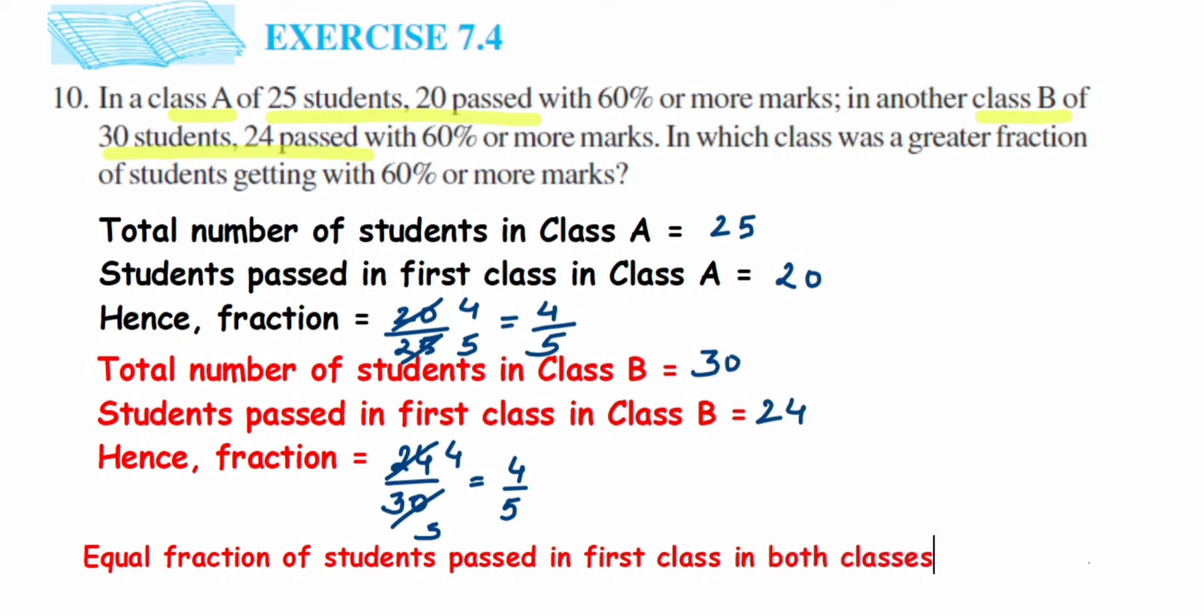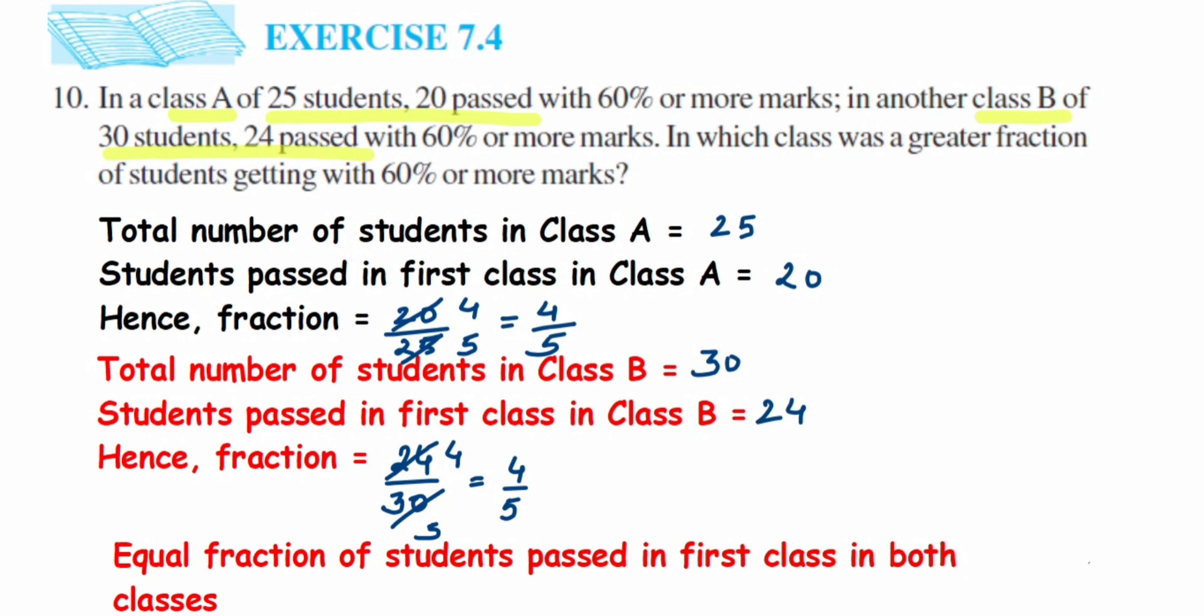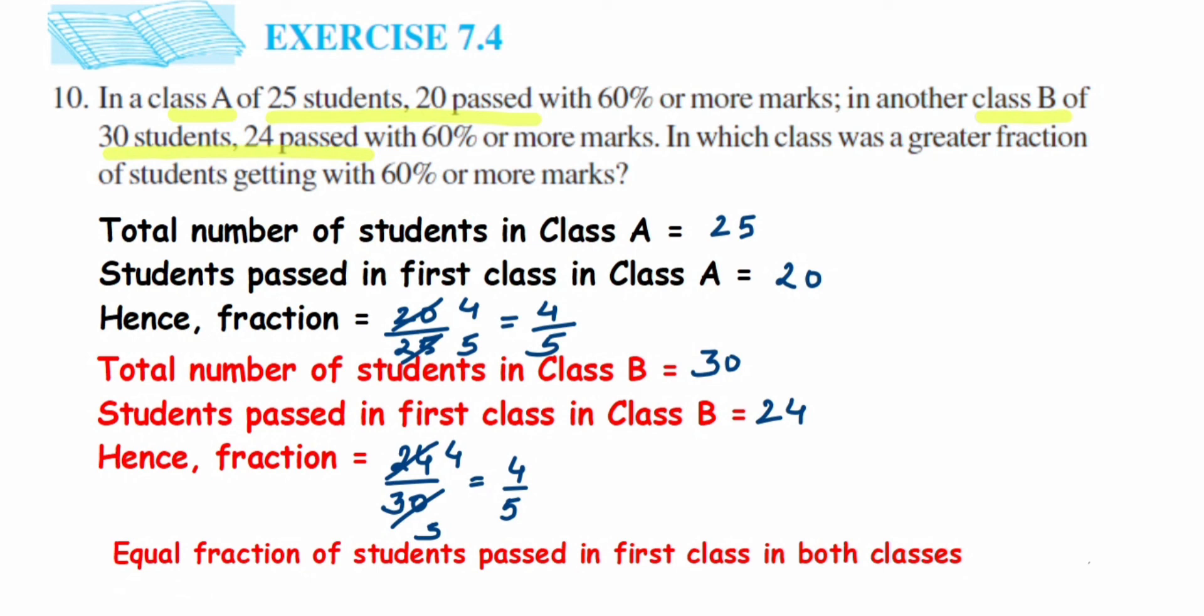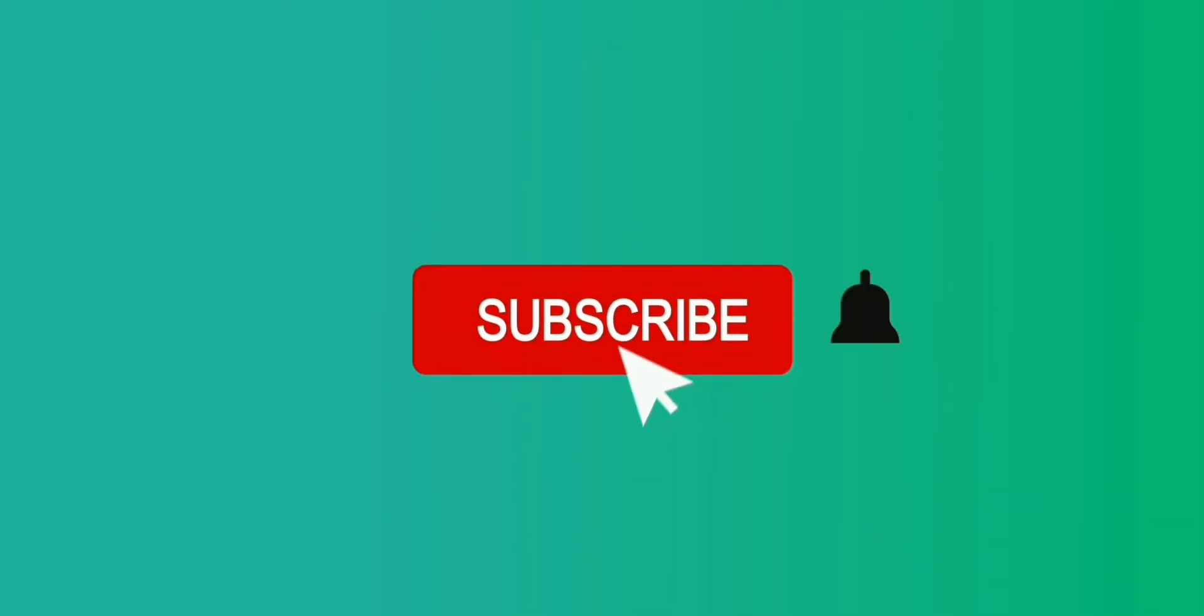That's it. First class means getting 60% or more marks, which is also called first class. It was a simple question. We had to just find the fraction and compare it. In this case, the fraction came out to be the same, 4 upon 5. I hope it's clear. In case you have any other question or doubt, please drop a comment below. I'll try to make a video on it. Thank you so much for watching.